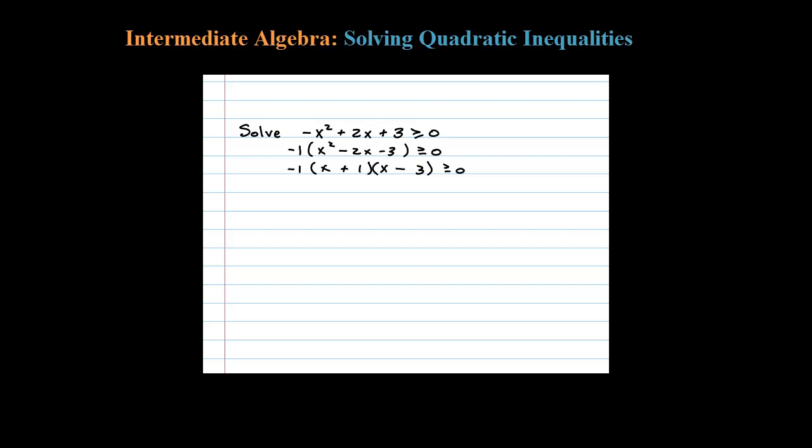Now we want to determine our critical values. The critical values for a quadratic inequality are the zeros, so we can set this equal to 0. Easily we can see x equals negative 1 will make that quadratic 0, and also x equals 3 will make that 0.